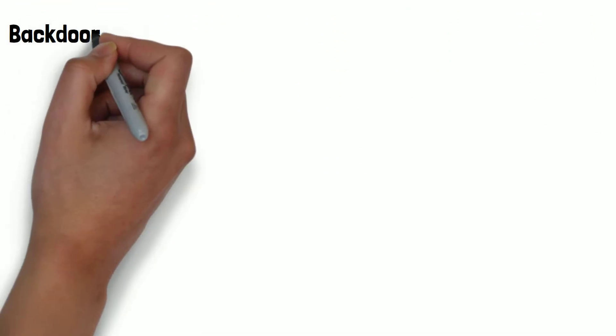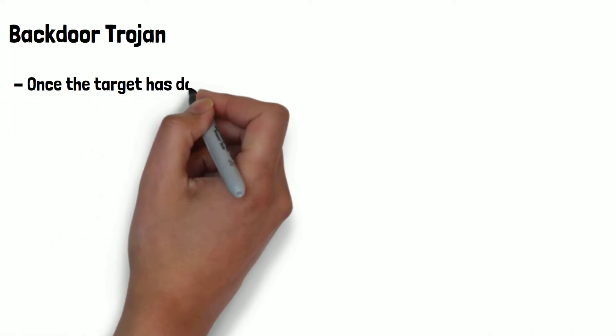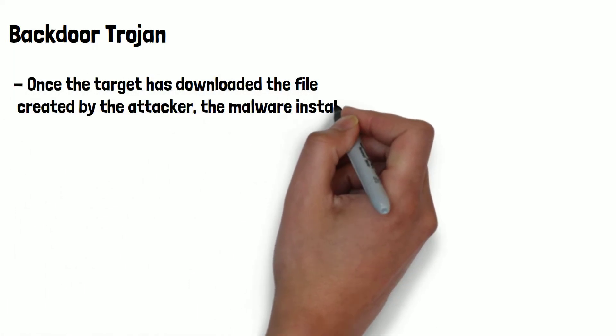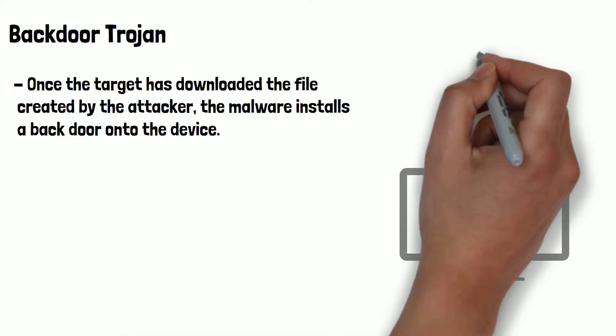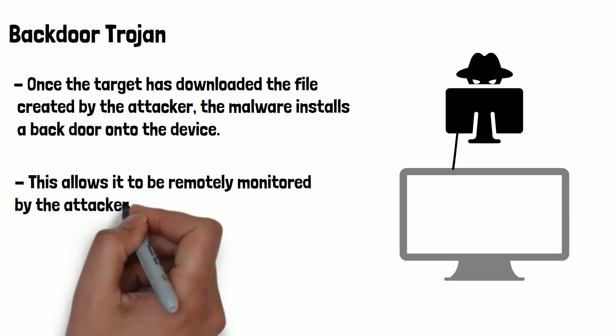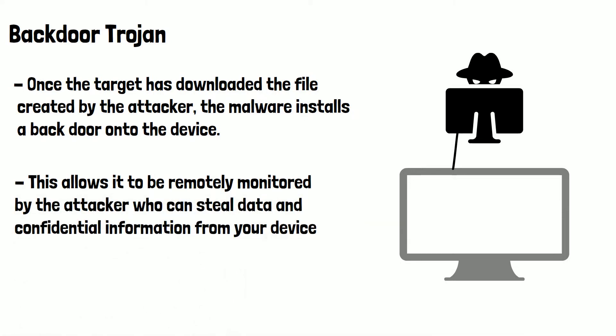One of the most common types of Trojan is a backdoor Trojan. Once the target has downloaded the file created by the attacker, the malware installs a backdoor onto the device. This allows it to be remotely monitored by the attacker, who can steal data and confidential information from your device. This can then be used to access various accounts or steal the victim's identity.